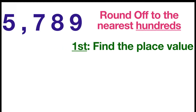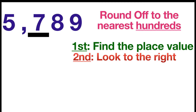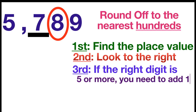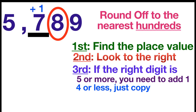The first step is to find the place value. Let's underline the digit at the hundreds place. Second, look to the right. The right digit after digit 7 is digit 8. Applying the third step: if the right digit is five or more, you need to add one. Since our right digit is digit 8, which is five or more, we need to add one. One plus seven equals eight.